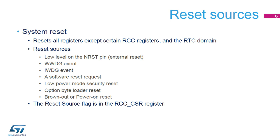Additional system reset sources include a software reset request, a low-power mode security reset which is generated when stop, standby, or shutdown mode is entered but is prohibited by the option byte configuration, an option byte loader reset, and a brownout or power-on reset. The reset source flag can be found in the RCC control and status register.